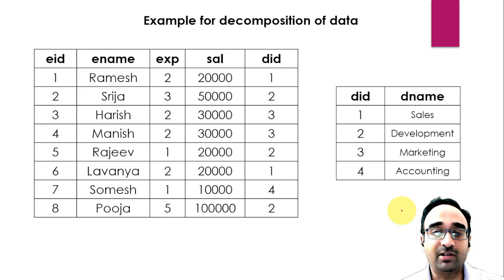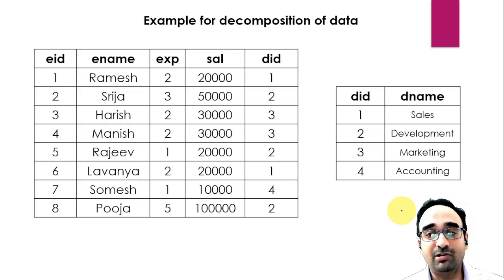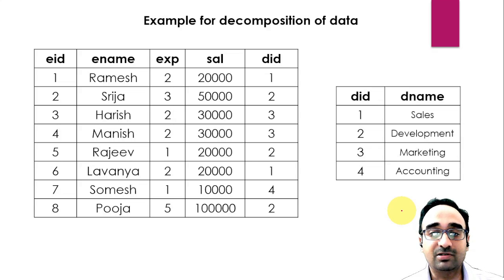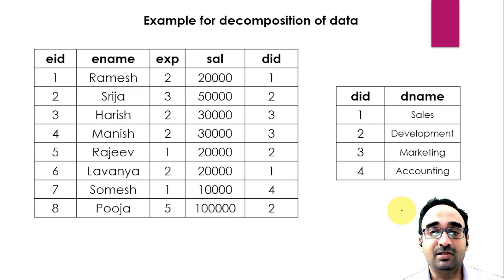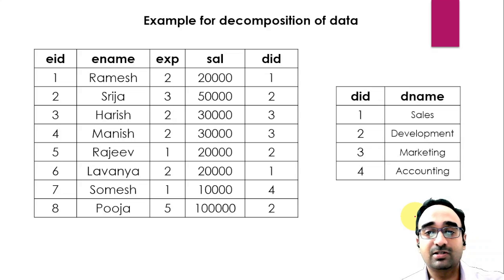I hope you understood what schema refinement is, why we perform it, when we perform normalization, and the different problems caused by redundancy of data — update anomalies, insertion anomalies, and deletion anomalies. Please like the video and subscribe to the channel. If you have any doubts you can always comment below. Thank you.